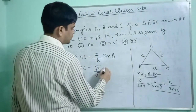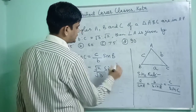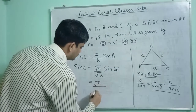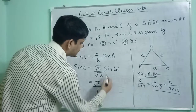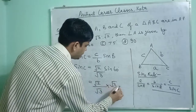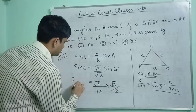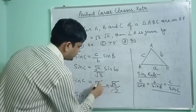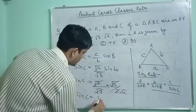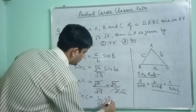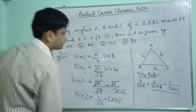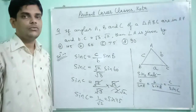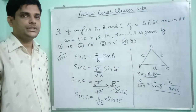So sin C equals (C/B) times sin B. B is 60 degrees, so sin C equals sin 60 divided by root 3. Sin 60 is root 3 over 2, so sin C equals root 3 over 2 divided by root 3, which equals 1 by root 2, that is sin 45 degrees.